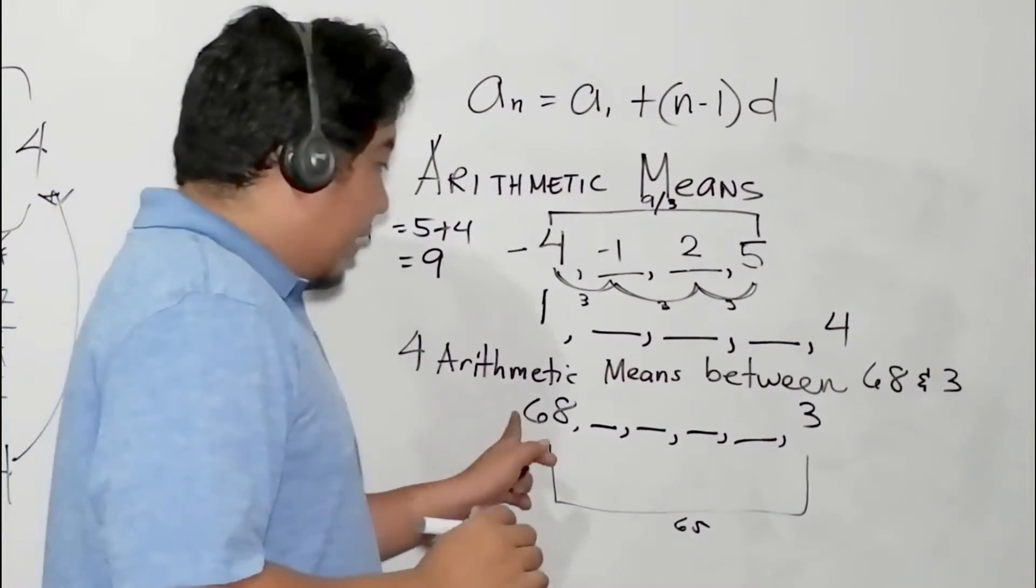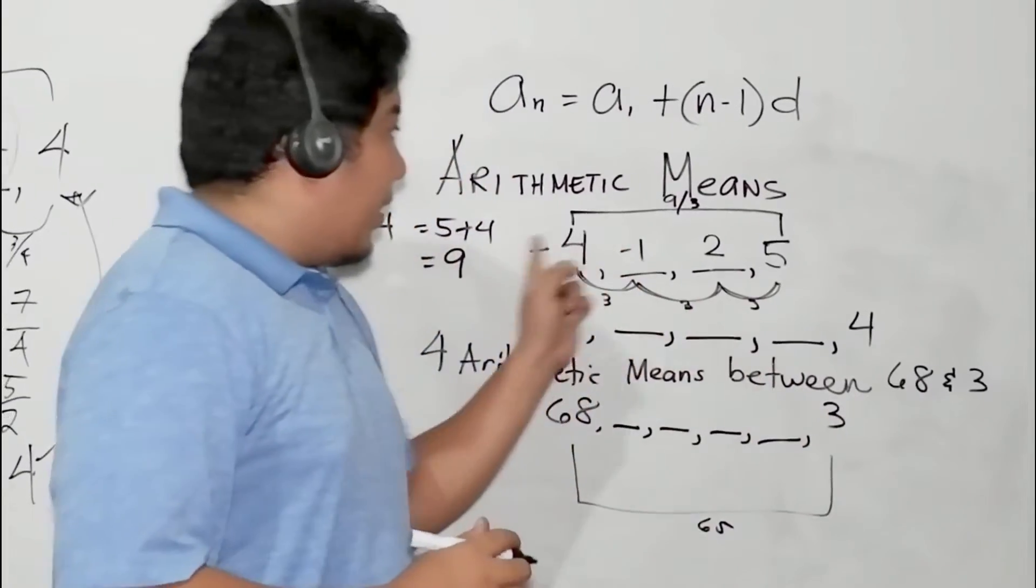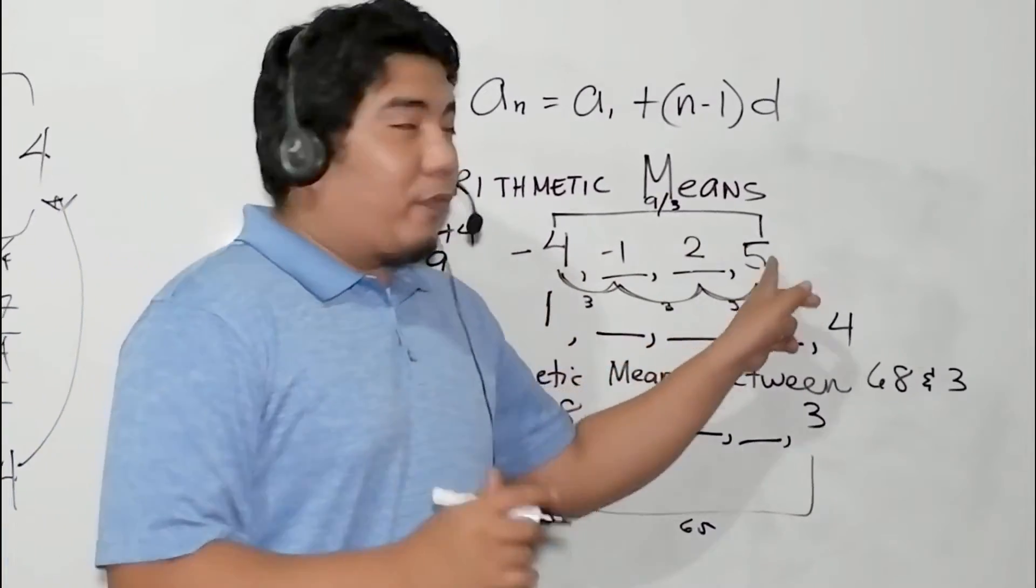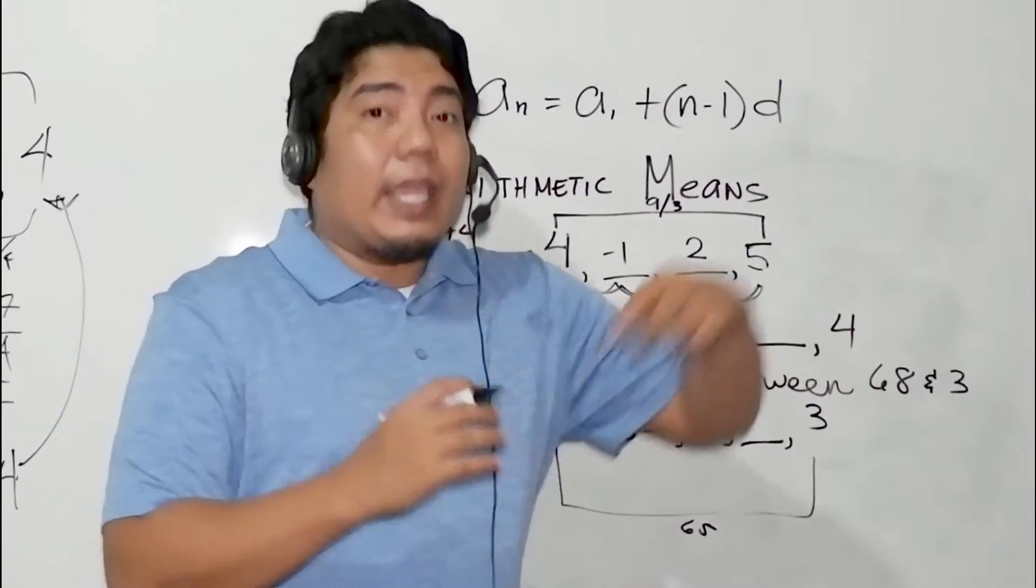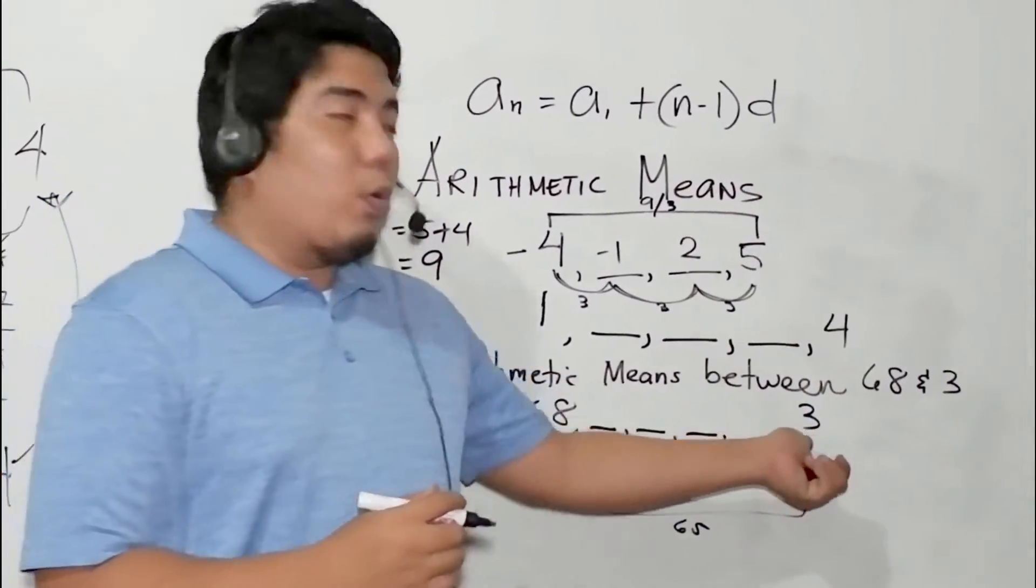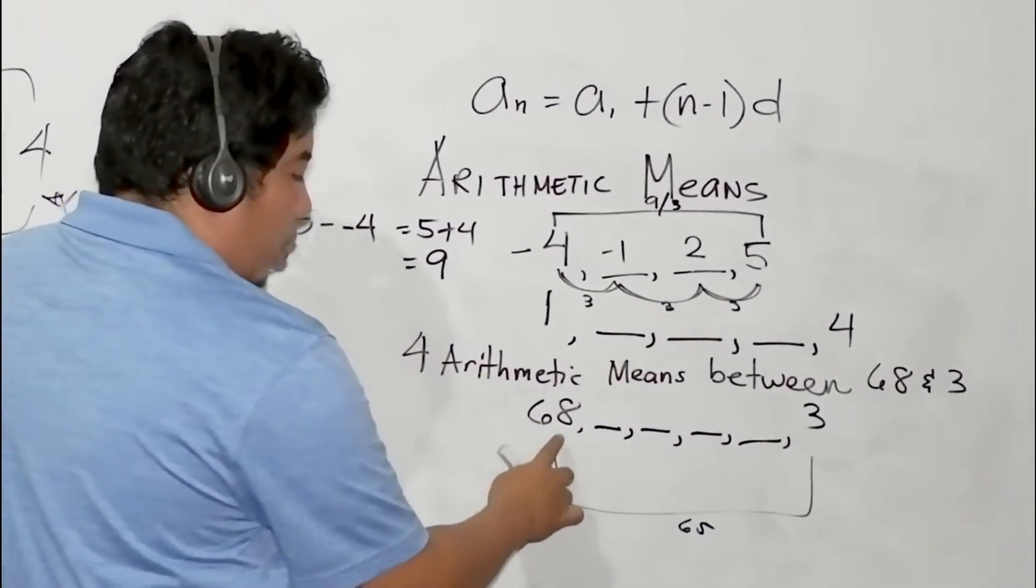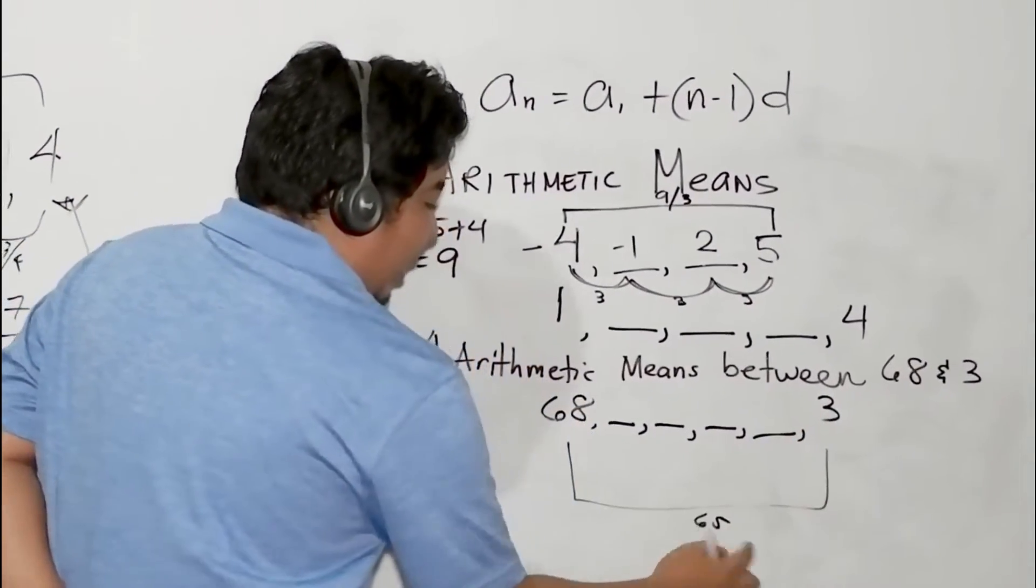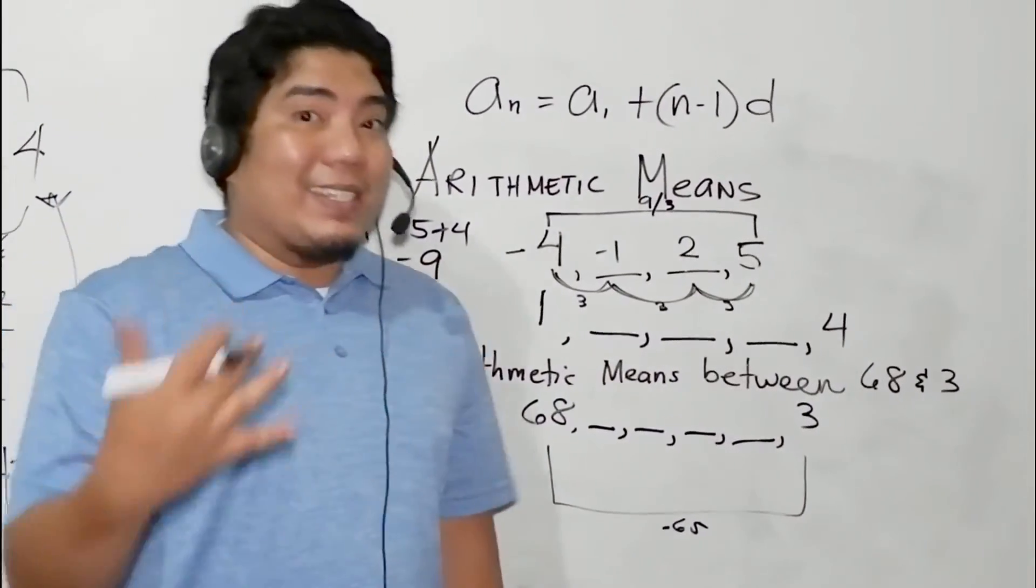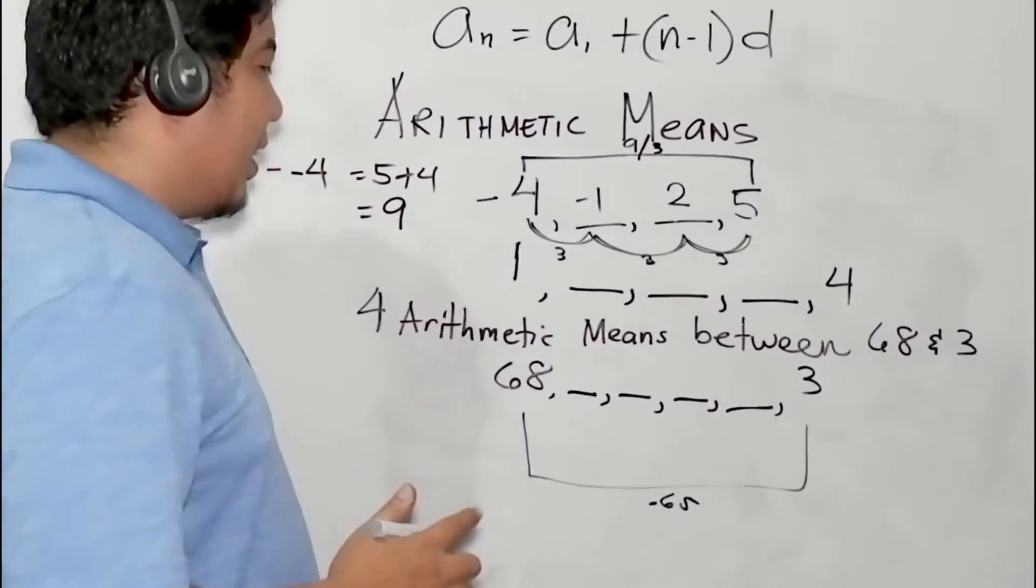But remember, this is decreasing. Not like earlier, -4 to 5 increasing, positive 1 to 4 increasing. However, 68 to 3, that is decreasing, going smaller. So 68 to 3, that is 65, we will consider -65.